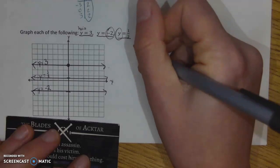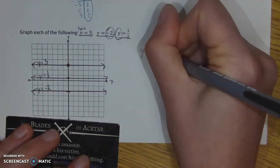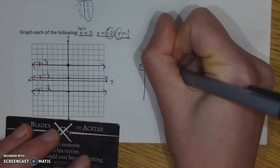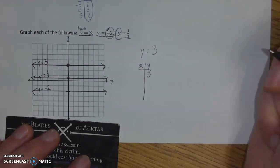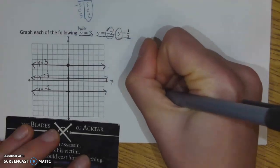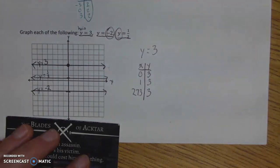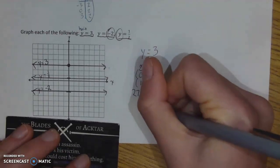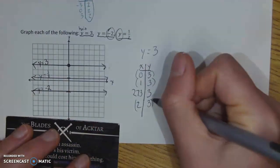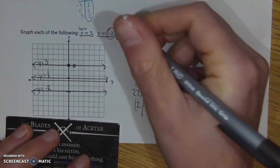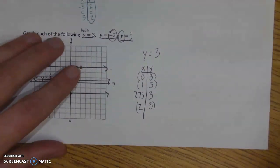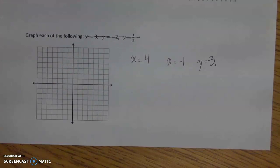If you want to verify, use a t-chart. For y equals 3, ask yourself: when is y equal to 3? It's always equal to 3, so it doesn't matter what x is. You could write x equals 0, y equals 3; x equals 1, y equals 3; x equals 2, y equals 3. Plot those points, draw the line through them, and you get y equals 3.